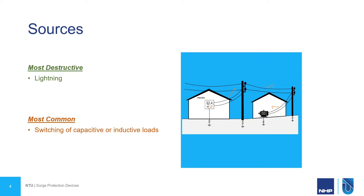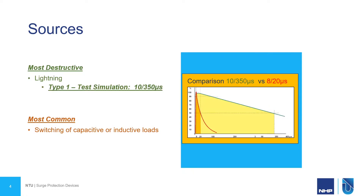Now no two surge events are going to be exactly identical. Each surge is going to differ in magnitude and duration. However, so that we can test and compare different SPDs, we need to simulate these events. So in IEC 61643, a lightning event is classed as a Type 1 and that is simulated by a 10 over 350 microsecond waveform, whereas the more common inductive type surge is a Type 2 and that's simulated by an 8 over 20 microsecond waveform. Note that the Type 1 has a lot longer duration, therefore it has a lot higher energy.